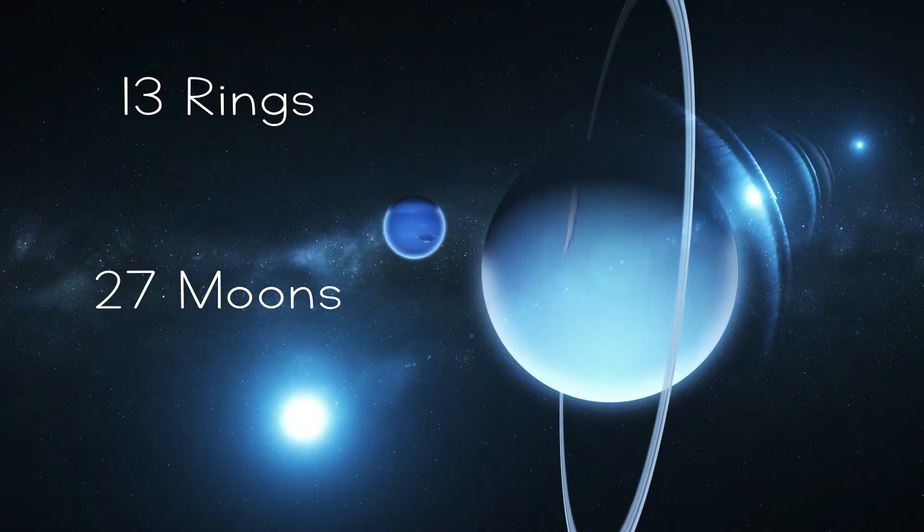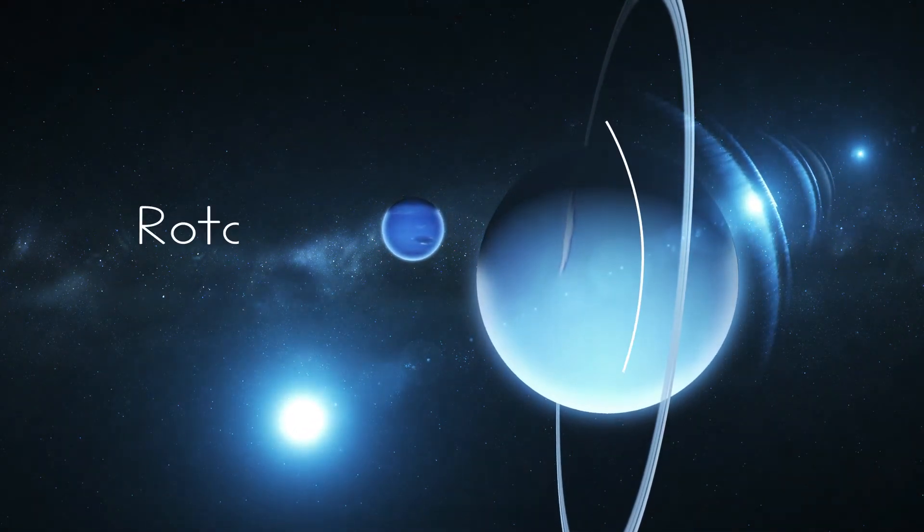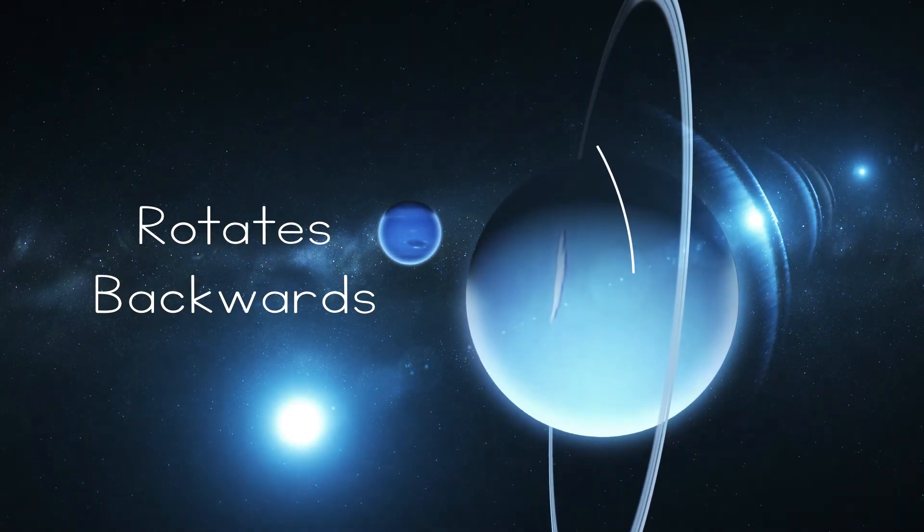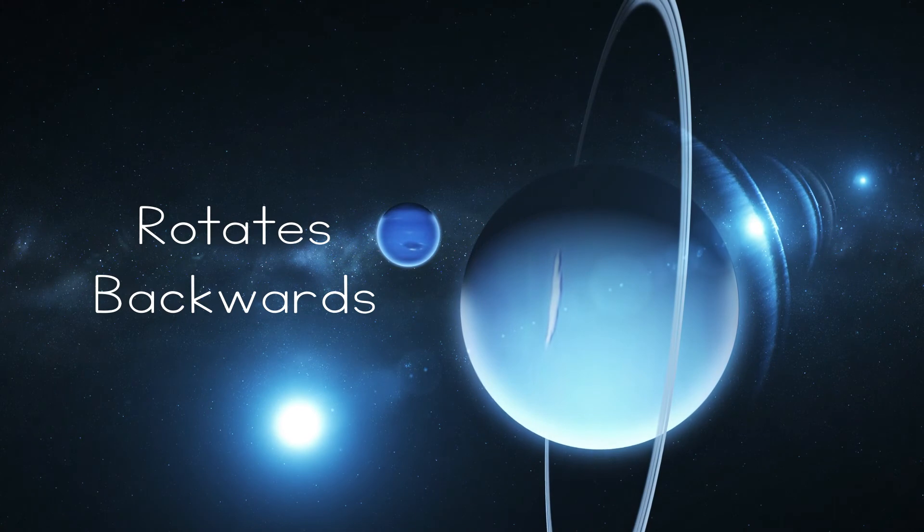We do know that, like Venus, it rotates backwards. Not only that, but it does this on its side, so its rings go up and down rather than horizontally like Saturn.